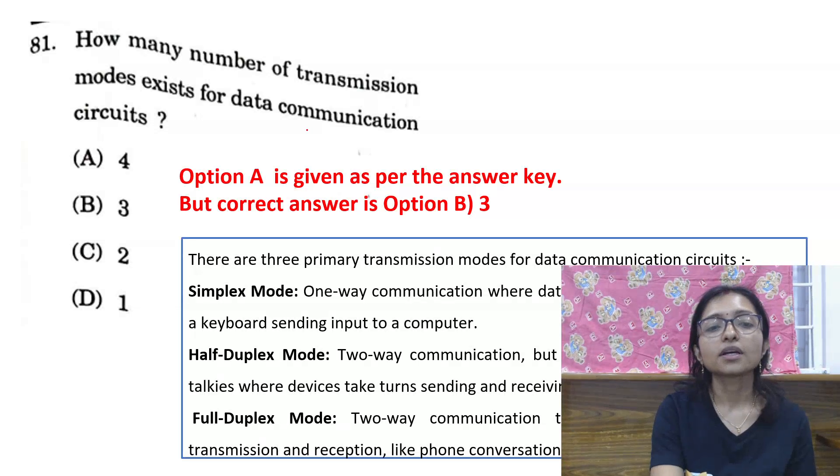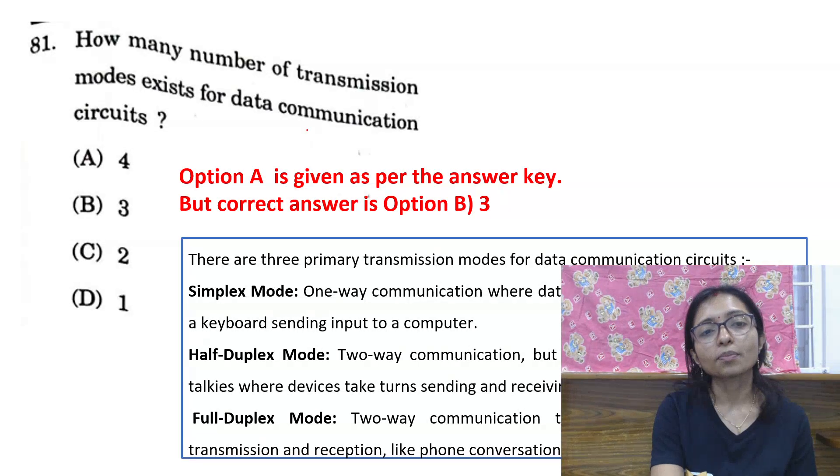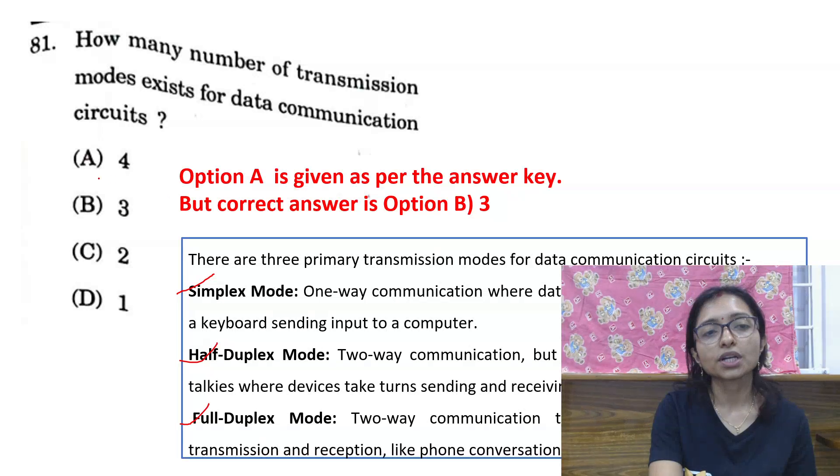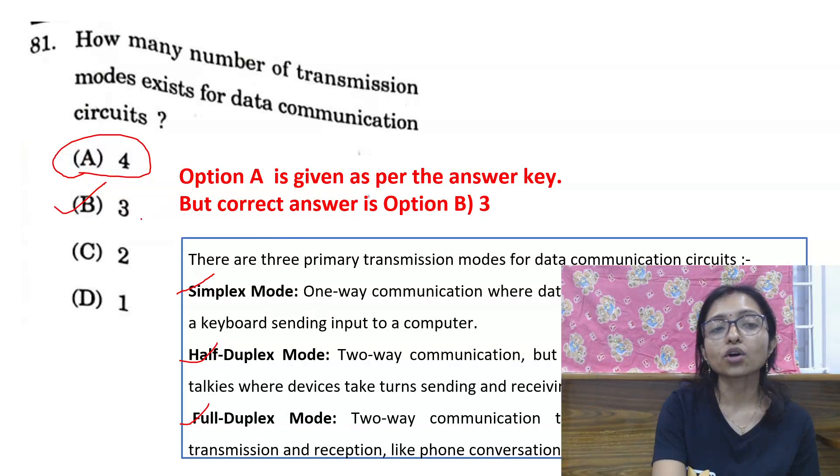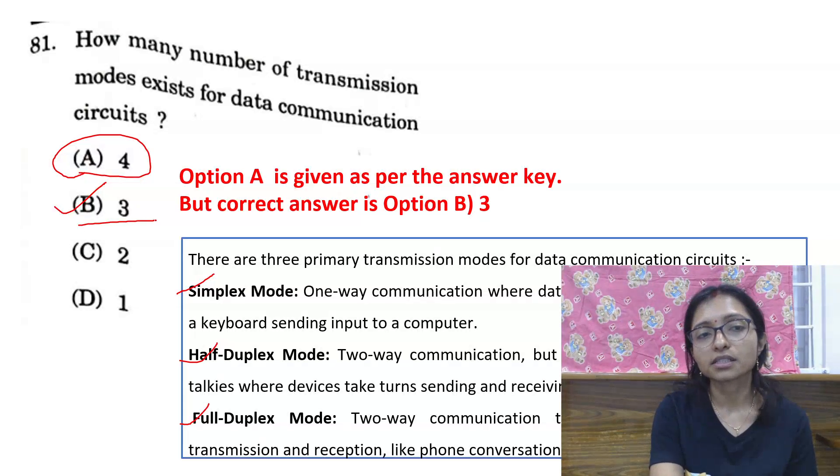This question is also wrong because there are three types of mode: one is simplex, half-duplex, and full-duplex. But they provide option A as the correct answer, but option B should be correct. So those who marked option B, they can challenge. This is the correct answer.